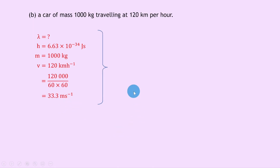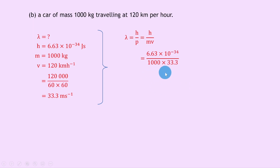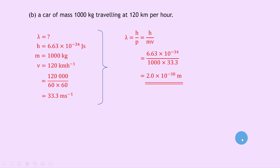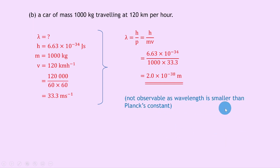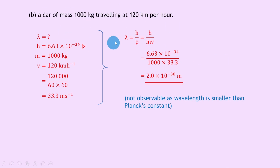Writing down lambda equals h over p equals h over mv, substituting in gives 6.63 times 10 to the minus 34 divided by 1000 times 33.3, giving 2.0 times 10 to the minus 38 meters. However, this is not observable as the wavelength is smaller than the smallest known quantity, which is Planck's constant. This suggests the de Broglie wavelength equation does not work for classical physics examples like a car — it only works for quantum physics and subatomic particles.